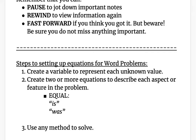Then you're going to create two or more equations to describe each aspect or feature in the problem, and we're going to go over what we mean by aspect or feature later on. As a reminder, the equal sign is used whenever you see the keywords 'is' or 'was.' Once you figure out your two or more equations in your system, you're going to use any method you want to solve. I wouldn't suggest graphing because most of the time you have really big numbers or it's more difficult to put it into slope-intercept form y = mx + b. So mostly I would suggest substitution or elimination.